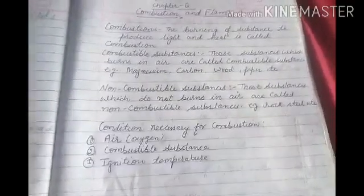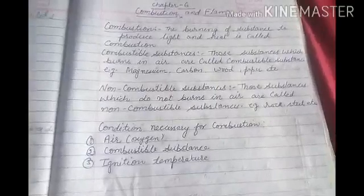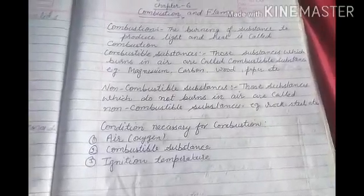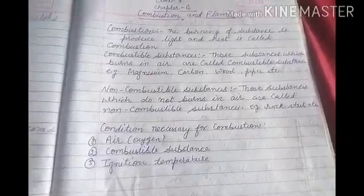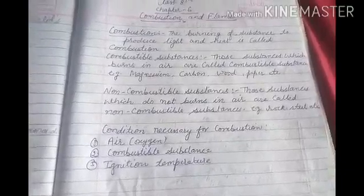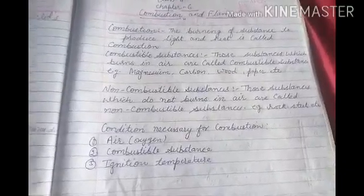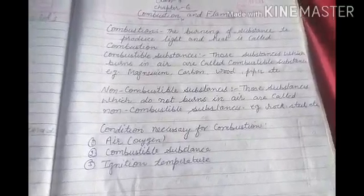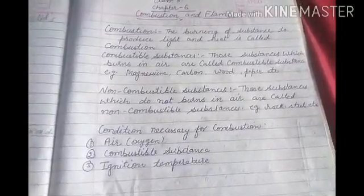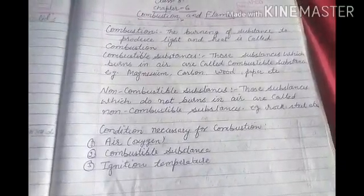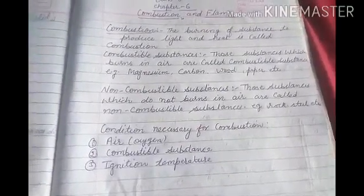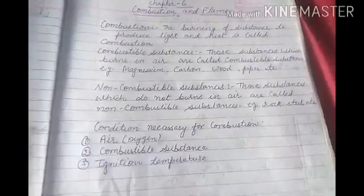For example, magnesium ribbon — woh oxygen ki presence mein, oxygen ke saath react karta hai aur white flame ke saath jalta hai, yani white flame produce karta hai. Carbon hai, lakdi hai, paper hai — ye sab air ki presence mein jalte hain, yani combustible substance kehte hain.